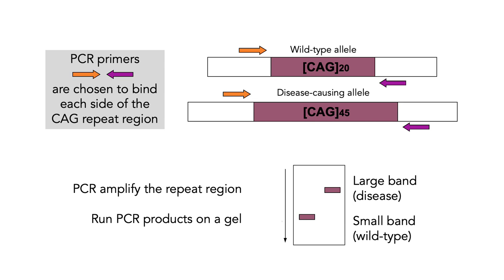How can we use PCR to distinguish between these alleles? The wild-type allele has CAG repeated 20 times; the disease-causing allele has CAG repeated 45 times. You develop PCR primers that bind on each side of the CAG repeat region — for instance, an orange primer on the left and a mauve primer on the right. If you amplify the region using PCR and run it on a gel, you'll find a large band for the disease-causing allele and a small band for the wild-type allele.